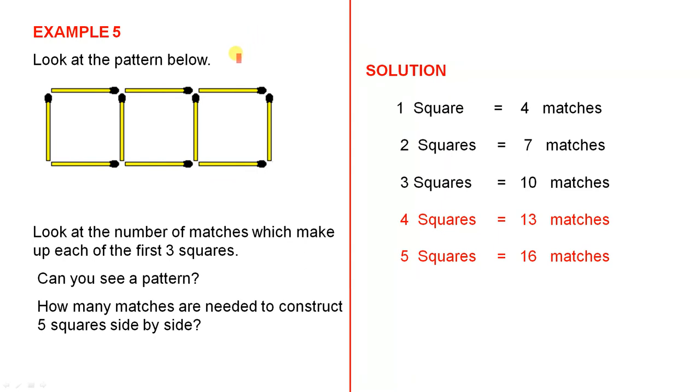Example 5: Look at the pattern below. This is just some matches, as you can see. Look at the number of matches which make up each of the first three squares. So you've got three squares here, we're going to try and work out if there's a pattern to actually construct those three squares. Can you see a pattern? So let's have a look at it carefully, see if we can work out if there's a pattern.